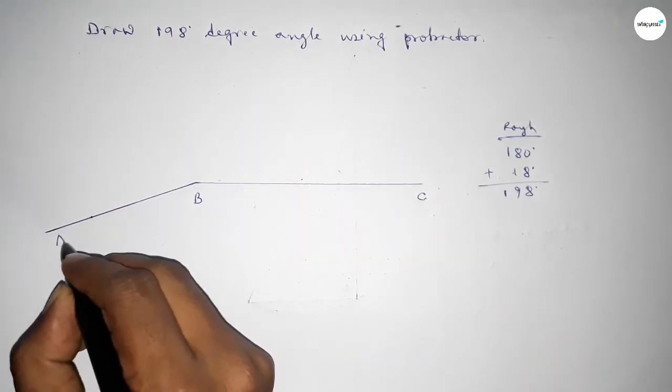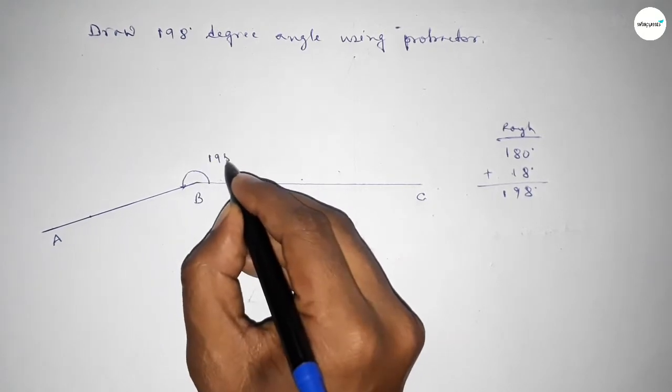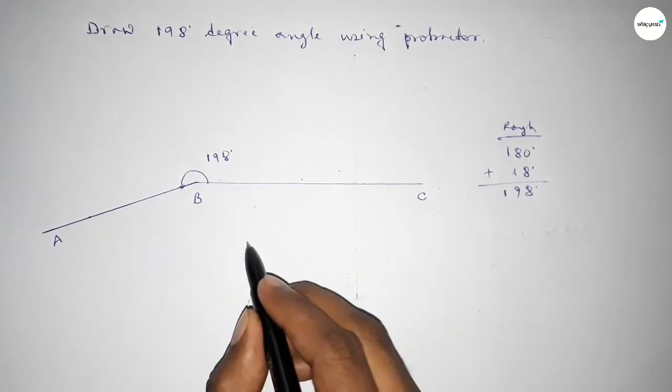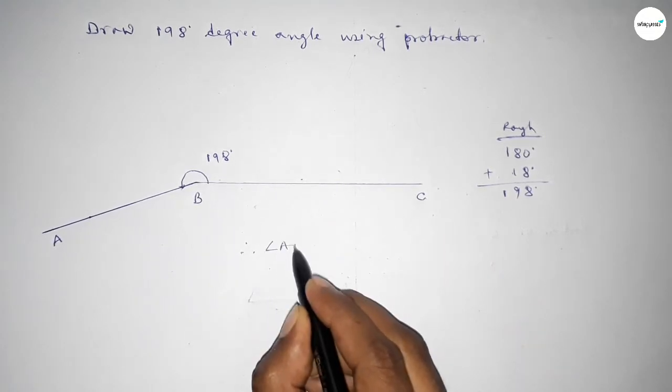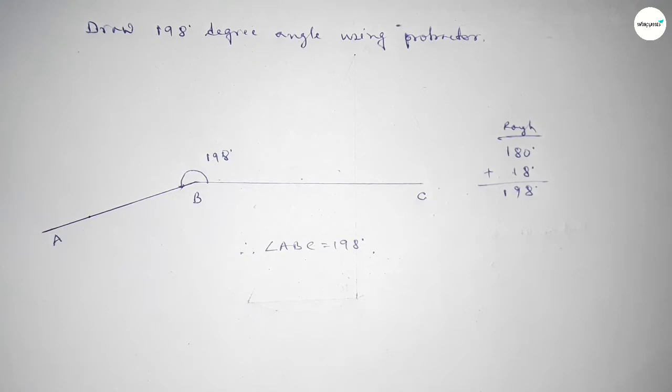So taking here point A. So angle ABC up to this is 198 degree angle. Therefore, angle ABC equals 198 degrees. That's all, thanks for watching. Please subscribe.